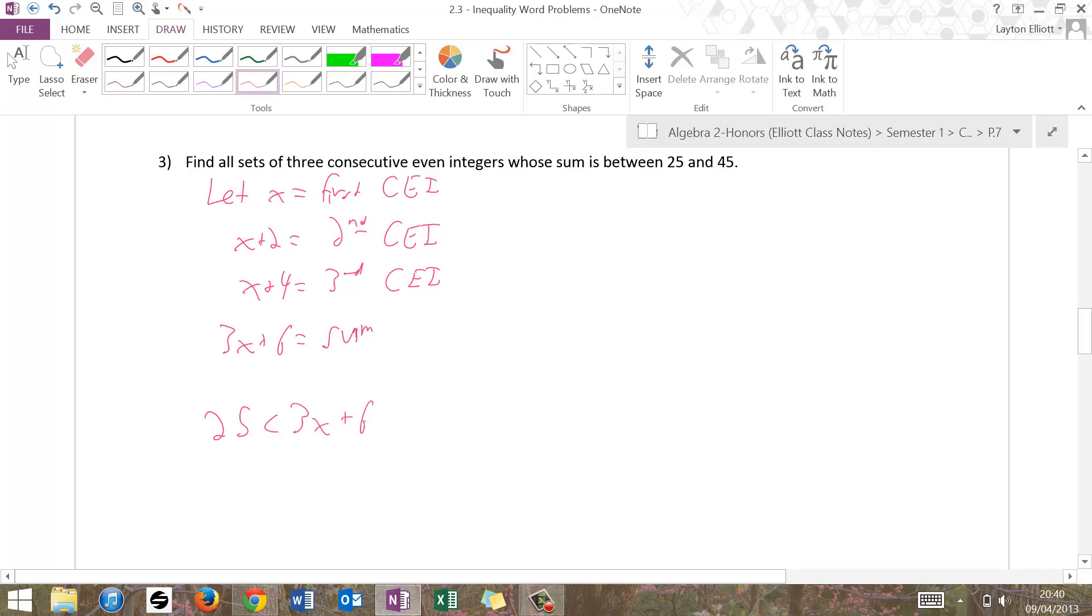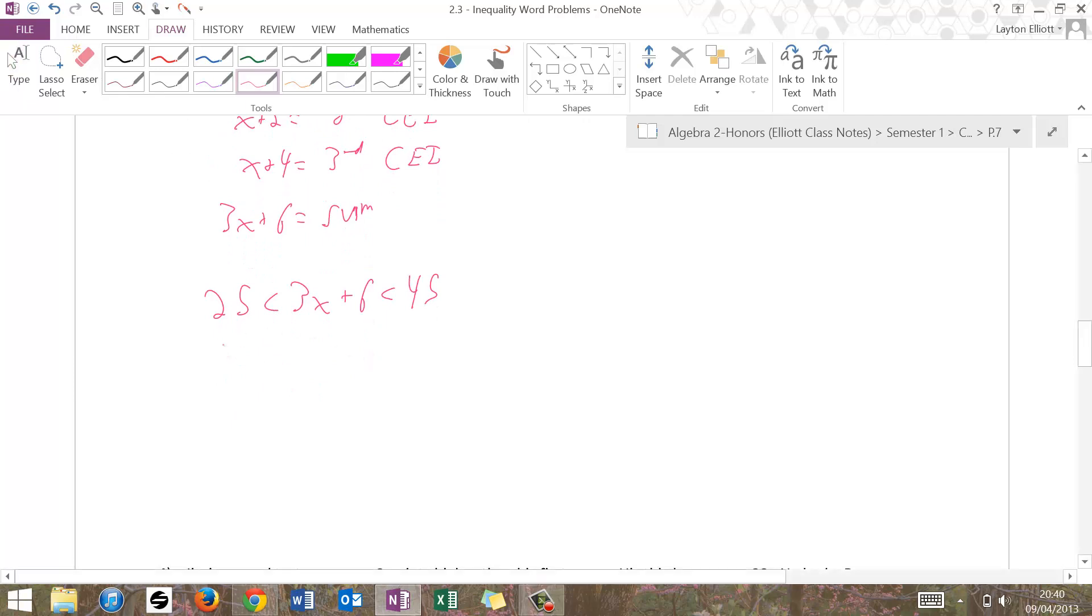So 25 less than 3x plus 6, less than 45. Subtract 6, you get 19 less than 3x, less than 39. And 19 over 3, which is 6 and 1 third, less than x, less than 13.